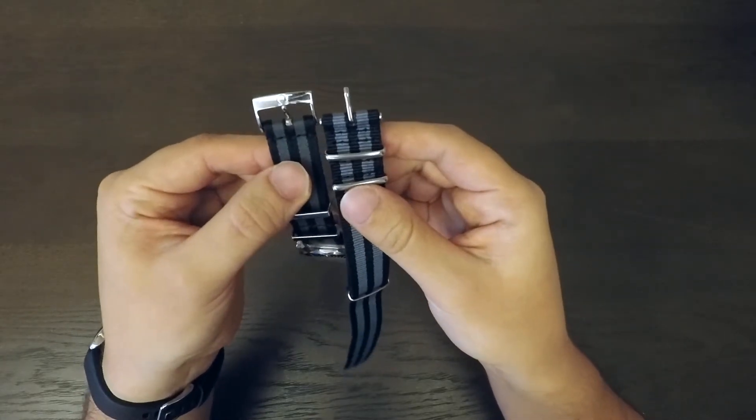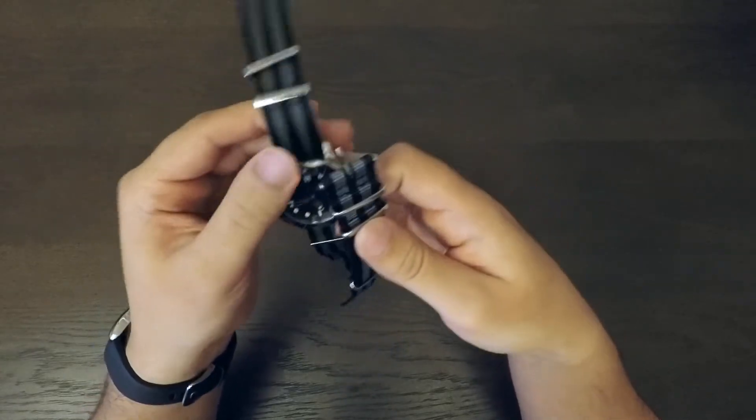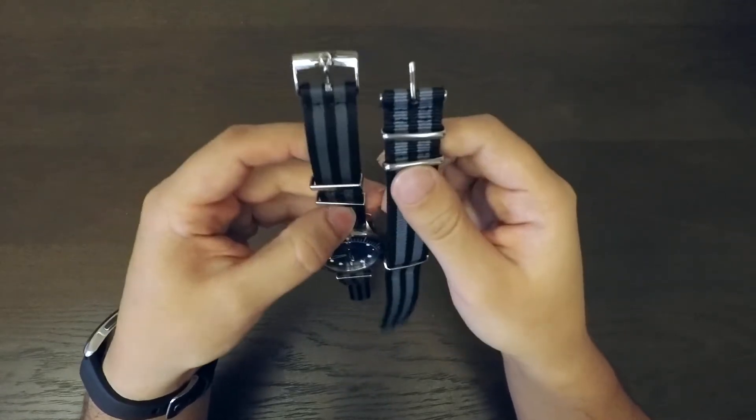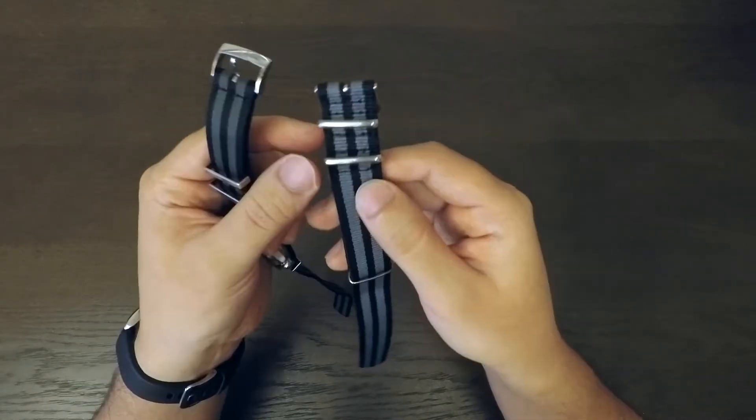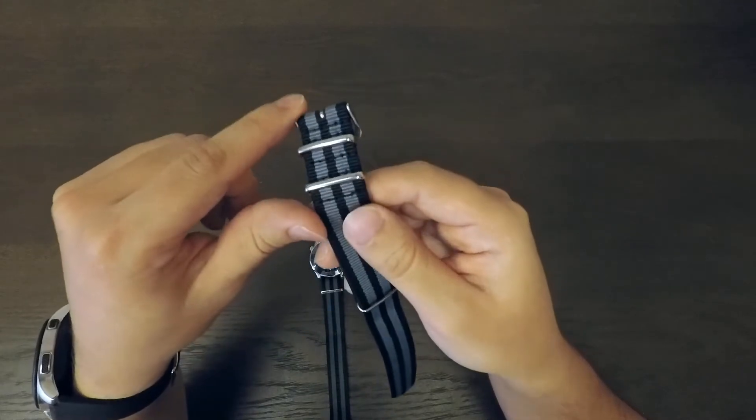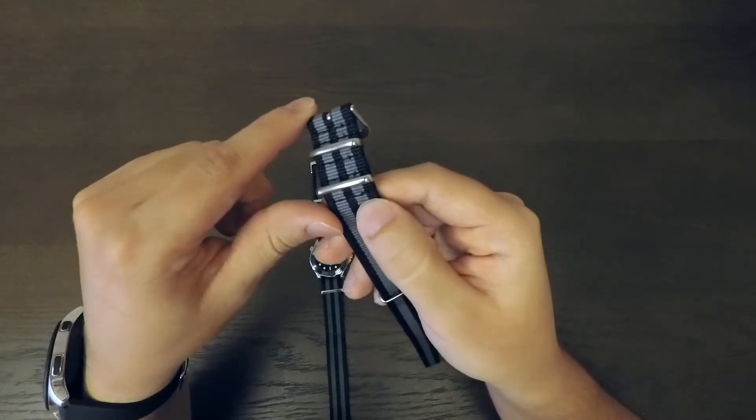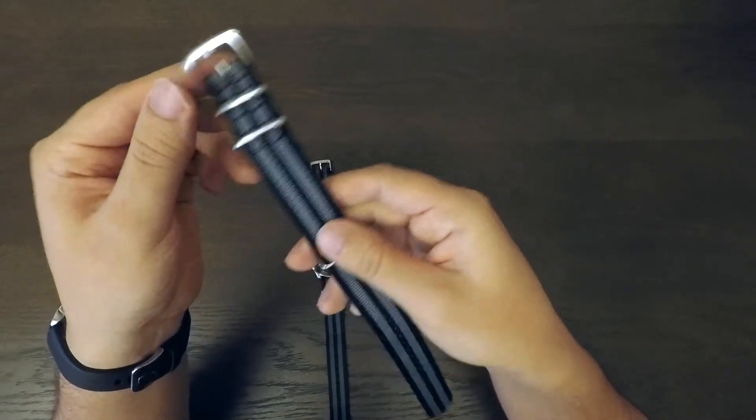In terms of stitching, the stitching on the Omega is just very good quality. You can see there is no variation in terms of how good the stitching is. However, with the generic one, you can see that there is a little bit of a scuffle towards the edges where it's not fairly straight.